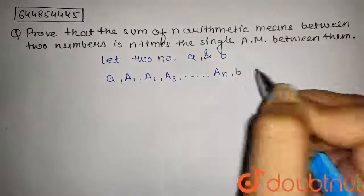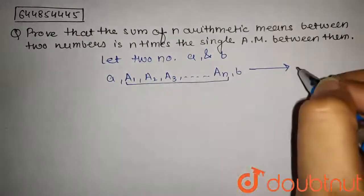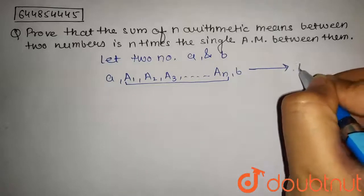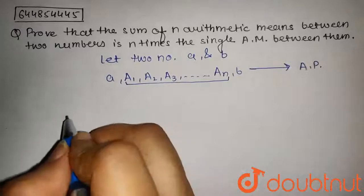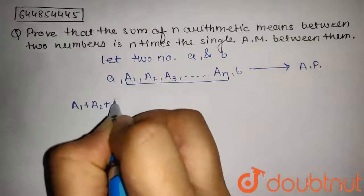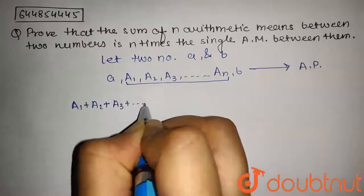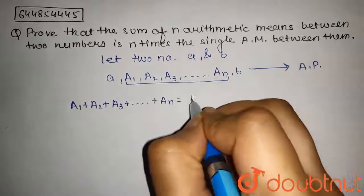And this sequence belongs to an AP. Now the sum of arithmetic means will be A₁ + A₂ + A₃ till Aₙ. Now this will be equal to n/2(A₁ + Aₙ).